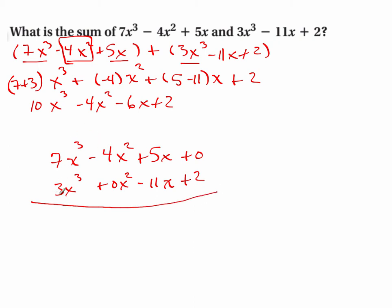Now I'm just going to add them straight down. 7 plus 3 is 10x³ - 4x² - 6x + 2. You should get the same answer either way.